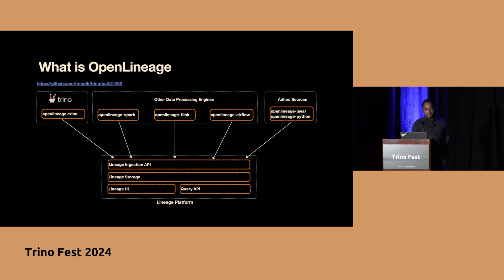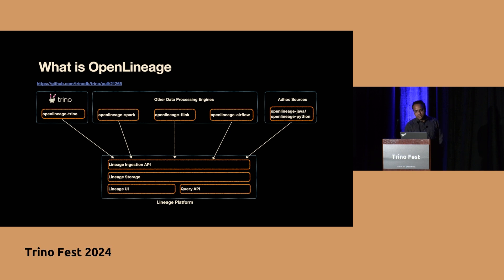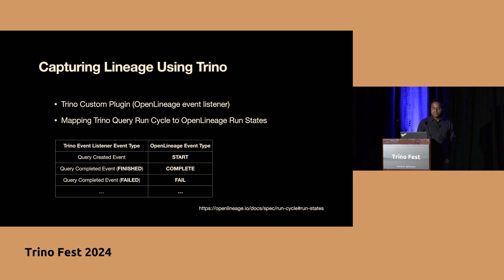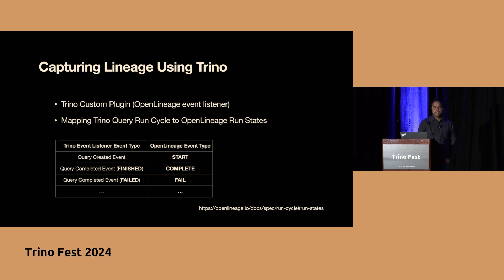The open lineage integration was recently added to Trino, and here is the PR that added it. The initiative started internally and then we wanted to open source it as well. We collaborated with the authors to get customization added into the PR. Trino has a service provider interface that lets you write custom event listeners, giving you hooks around query created and query completed events. We are leveraging those two events and translating them to corresponding open lineage event types.